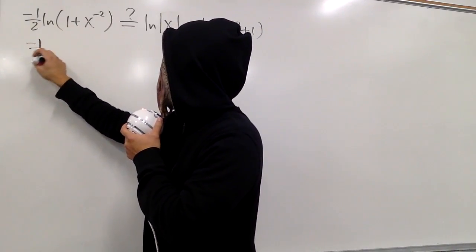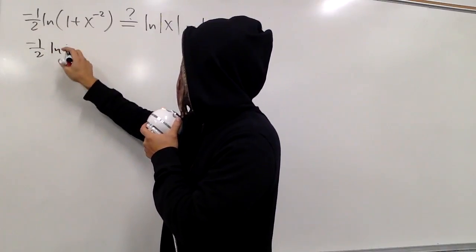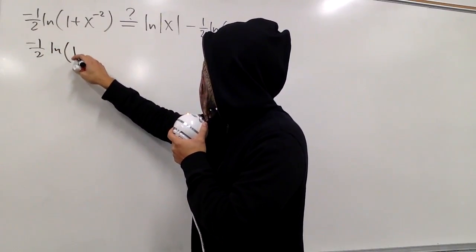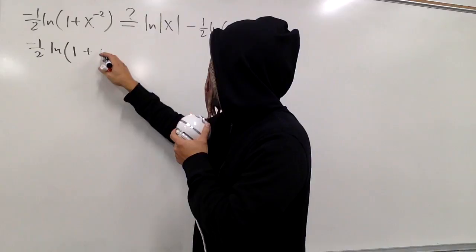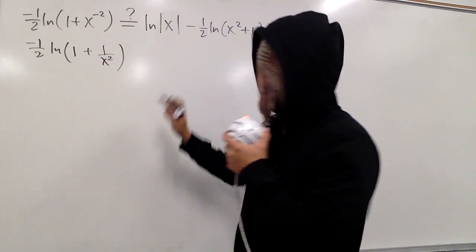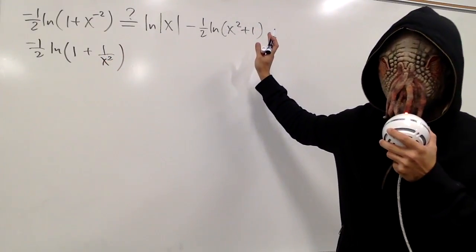Let me still write it down as negative 1 half, and we have the ln. And parentheses, 1 is of course the 1, plus that is the same as 1 over x squared. And as I said, I'm not going to touch the right-hand side at all.